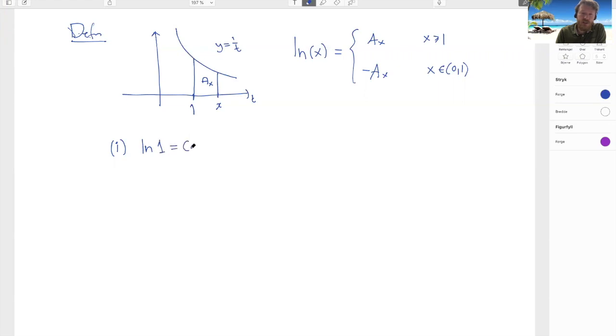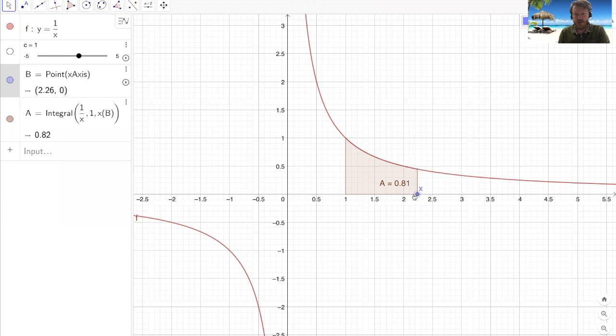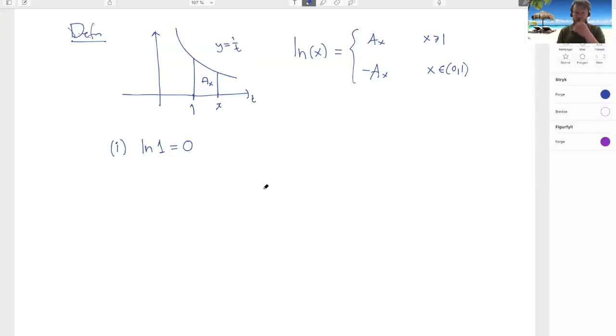the logarithm of 1 is 0. And this shouldn't be so hard to realize because if I'm now taking the area where the baseline has length 0, so putting my x at 1, then the area here should be 0, right? So that makes sense.